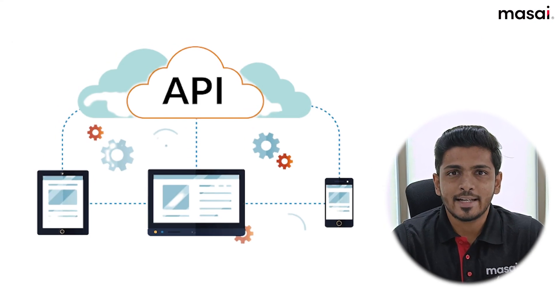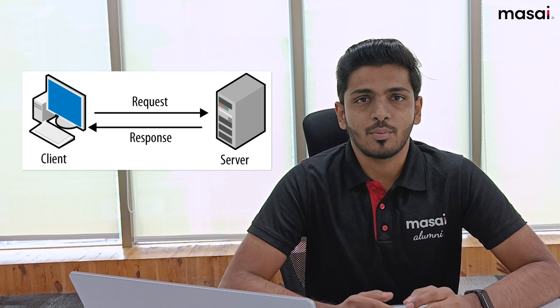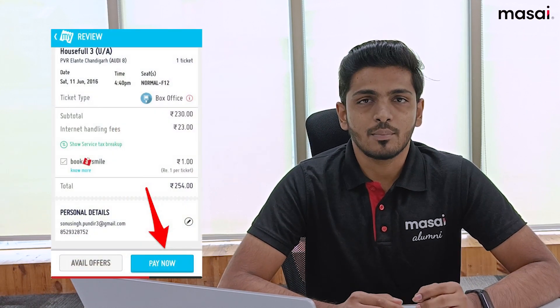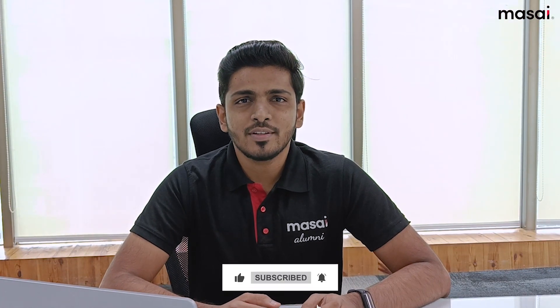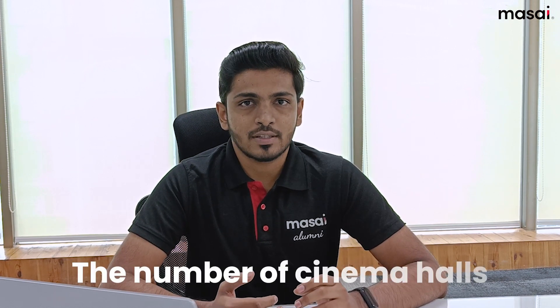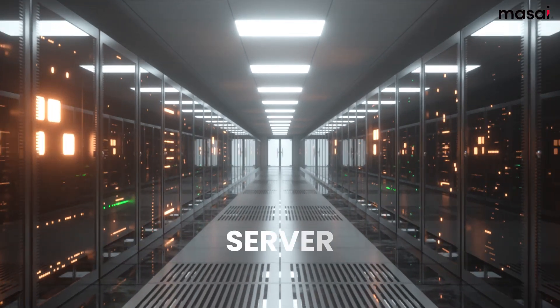An API is an interface for two or more computers to interact. Now let's think of a client and server model. Let's say you have to book a movie — you open BookMyShow or something similar. You get all the movies listed, but those movies are not coming from the web page itself. They're not hardcoded by the developer, because it keeps changing — the number of shows, the number of movies, the number of cinema halls open near you. So that's coming from somewhere else, basically a server.